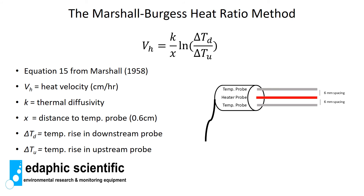Once the temperature measurements from the downstream and upstream probes are taken, we use the equation developed by Marshall in 1958 — equation 15 in Marshall 1958. The equation uses thermal diffusivity divided by the distance between the heater probe and temperature probe, multiplied by the log of the ratio of the downstream to the upstream temperature. It is a fairly simple equation.